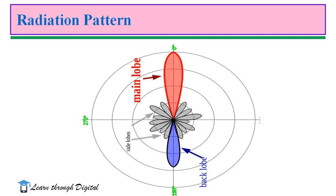Radiation can be plotted graphically as a function of angular position and radial distance from the antenna. The radiation pattern consists of a main lobe, side lobe, and back lobe. The main lobe or main beam indicates the direction of maximum radiation. The back lobe is radiation in the undesired direction. Side lobes and back lobes are called as minor lobes, indicating the direction of unwanted radiation.